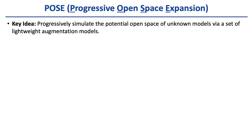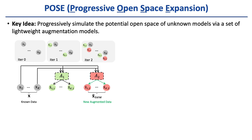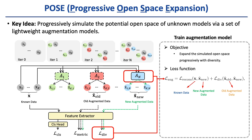In our paper, we propose a solution named Progressive Open Space Expansion. The key idea is progressively simulating the potential open space of unknown models with a set of lightweight augmentation models. The augmentation models are trained progressively at each epoch, simulating the open space by converting known data to augmented data. For training a new augmentation model, the objective is to ensure the simulated open space is expanded with diversity. We apply a pixel reconstruction loss to control visual consistency, and a diversity loss to enlarge the difference between new and old augmented data in the embedding space.